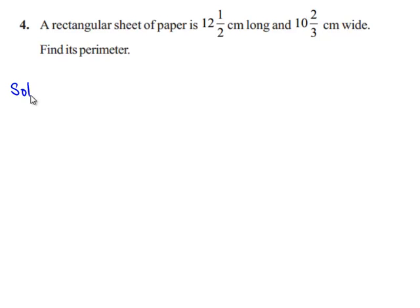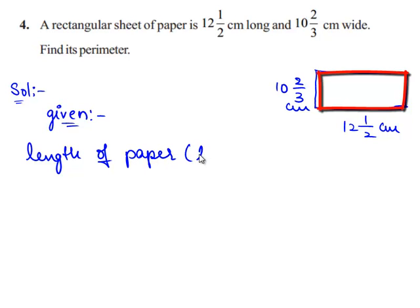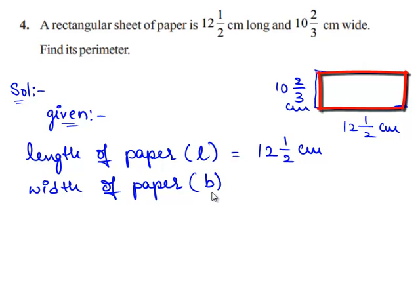So let us move on to the solution. Consider a rectangular sheet of paper. Given that the length of the paper is 12 1/2 cm and the width of the paper is 10 2/3 cm, let us first write down the given dimensions. Given: length of the paper, let it be represented by L, is equal to 12 1/2 cm, and width of the paper, let it be represented by B, is equal to 10 2/3 cm.